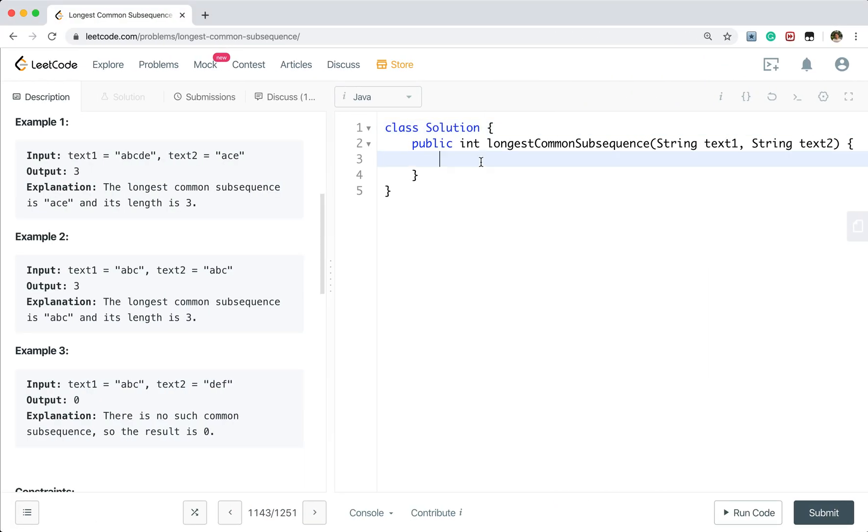Now let's write the code. We get the length of these two strings. M is text1 length and N is text2 length. We use a DP array and its size should be M plus 1 and N plus 1.